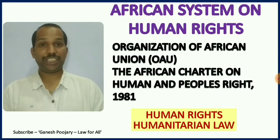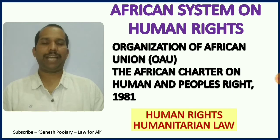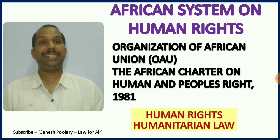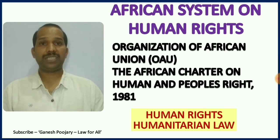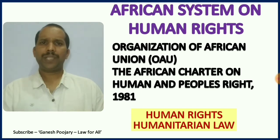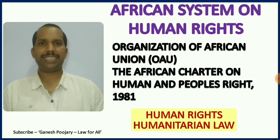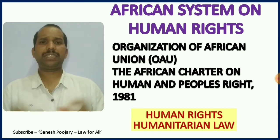Welcome to my legal classes, this is Ganesh Pujari. We have already discussed two important regional systems of human rights - the European system and the American system. This is the third discussion where I am going to discuss the African system on human rights. We have to focus on two important aspects: the Organization of African Union (OAU), currently just called the African Union (AU), and the African Charter on Human and People's Rights 1981.